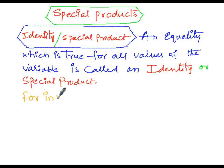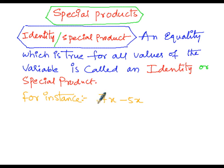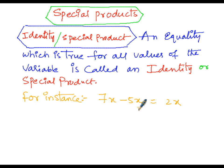For instance, consider the equality: 7x minus 5x equals 2x. Here, 7x minus 5x simplifies to 2x because 7 minus 5 is 2, and since 7 is greater, the sign is positive. So the left-hand side 7x minus 5x equals the right-hand side 2x. This equality must be satisfied for all real values of the variable x.